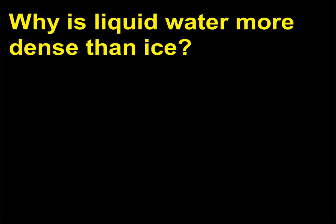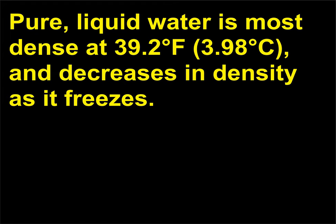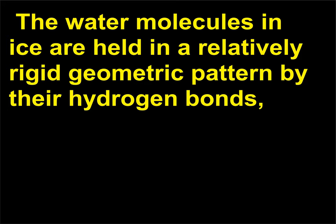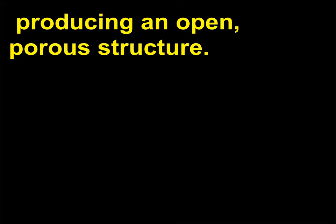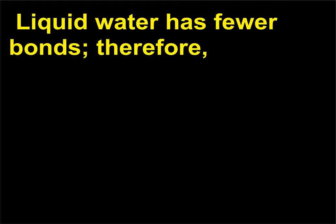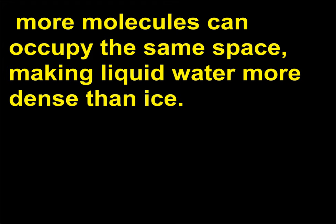Why is liquid water more dense than ice? Pure liquid water is most dense at 39.2°F (3.98°C) and decreases in density as it freezes. The water molecules in ice are held in a relatively rigid geometric pattern by their hydrogen bonds, producing an open, porous structure. Liquid water has fewer bonds; therefore, more molecules can occupy the same space, making liquid water more dense than ice.